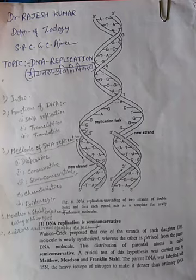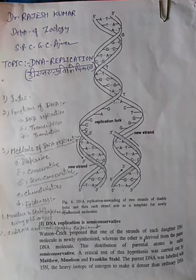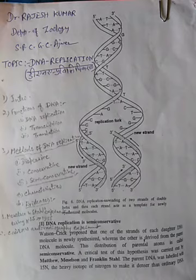DNA replication ke doran base pairing niyam kare katata hai, jisme adenine hamesha thymine ke saath aur guanine cytosine ke saath jura ta hai. Aur as a consequence of this — is prakar ke result ke prasad — pratyek daughter molecule parent molecule ki ek prati hoti hai.